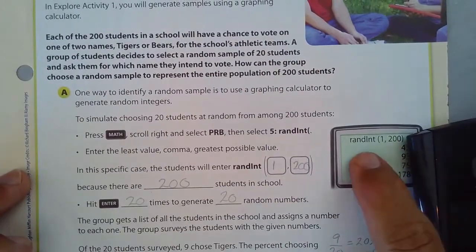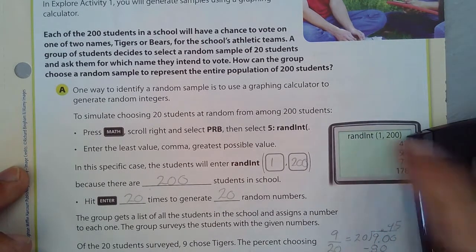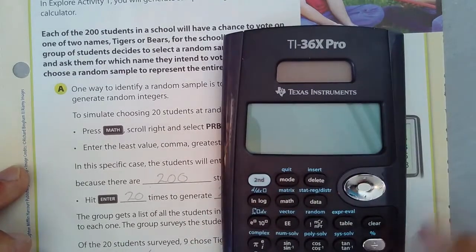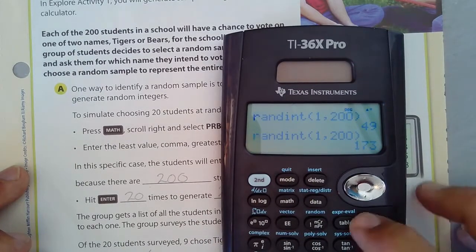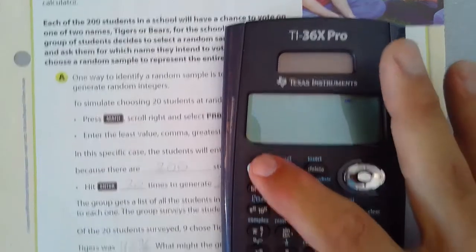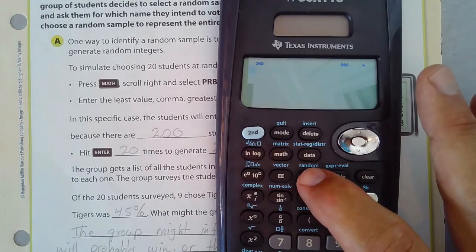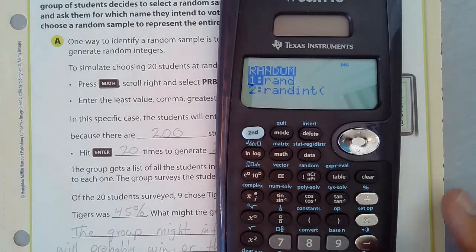So I'm going to get the random integer from 1 to 200. I'll turn it on. I have to hit random, I see random right there up above, and I'm going to choose number two, rand int, so I get that.